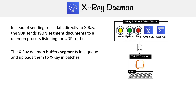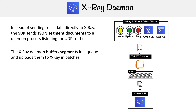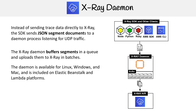This makes sense because if you're sending logging or instrumentation data, you're going to have a lot of requests, and you don't want the API to be flooded. So this acts as a buffer, and then it sends the batch information to the X-Ray API so that it's not so burdensome.